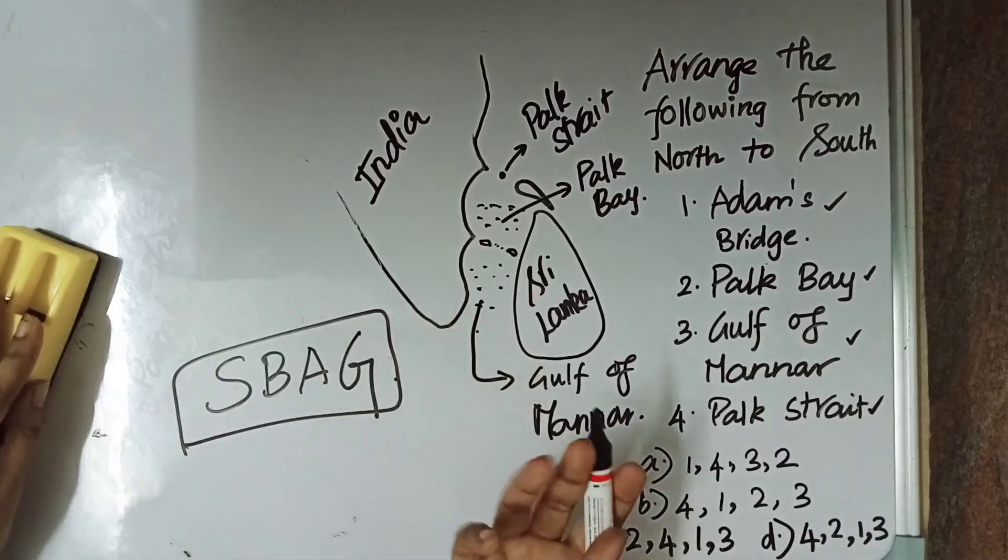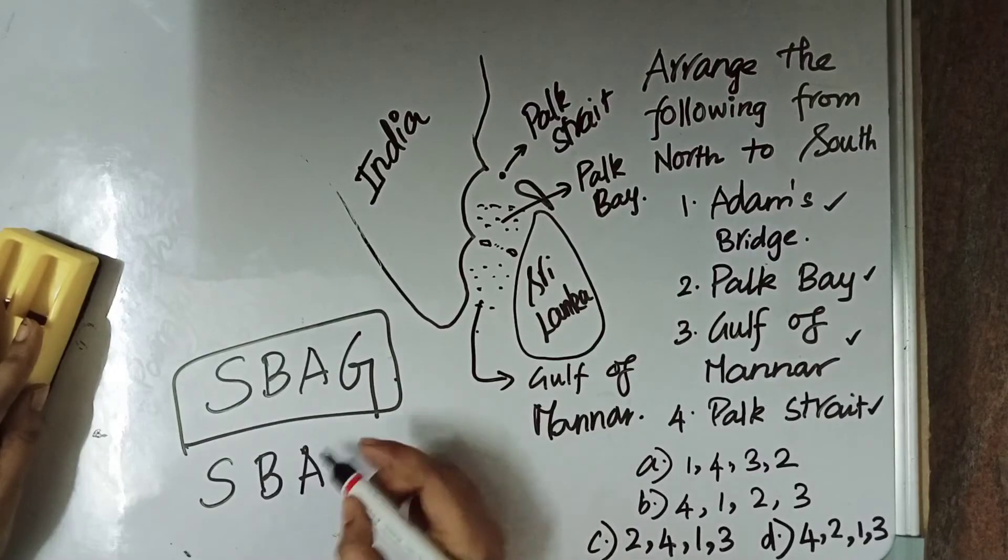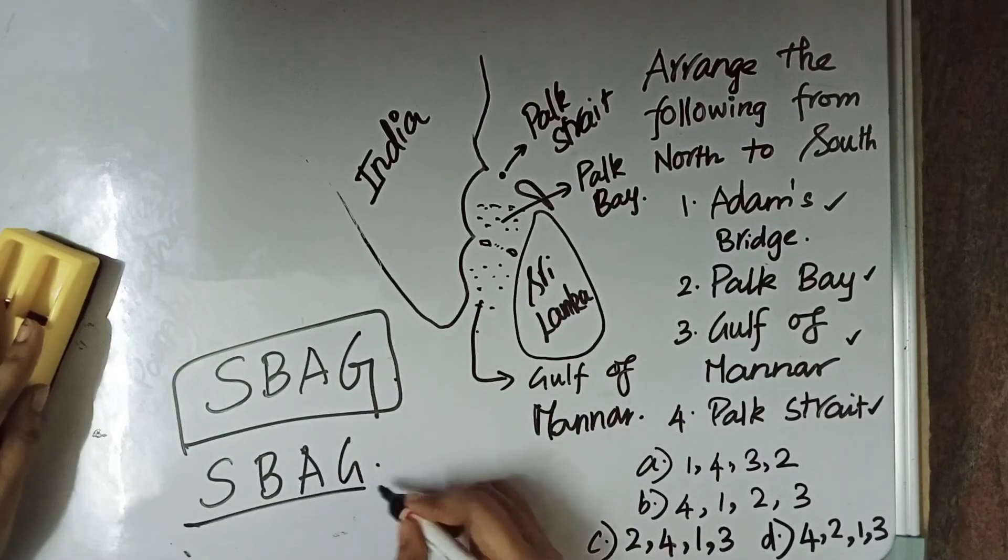So, it is SBAG. SBAG is the acronym to remember it. First we have Park Strait. Then we have Park Bay. Then we have Adams Bridge. Then we have Gulf of Mannar. So, it is SBAG to remember.